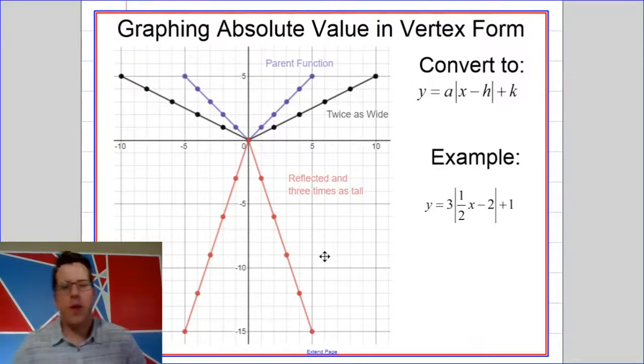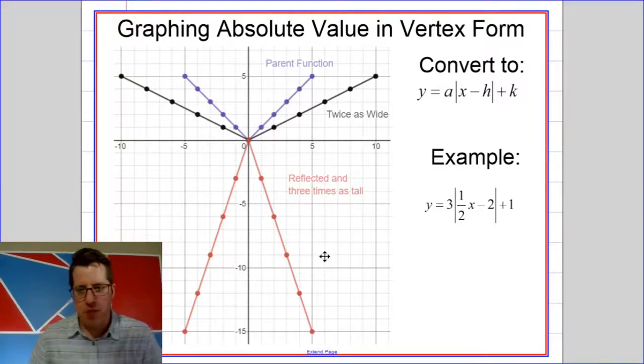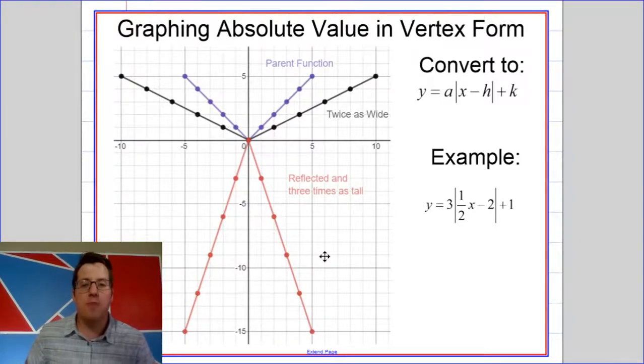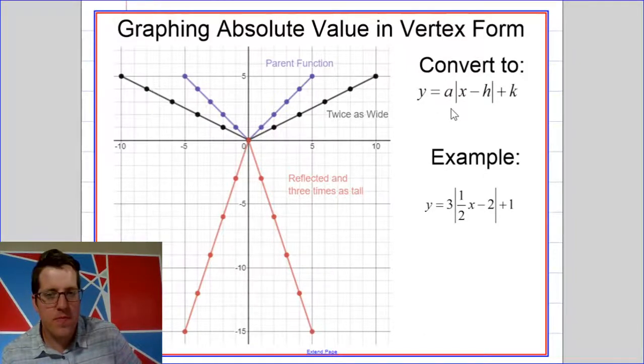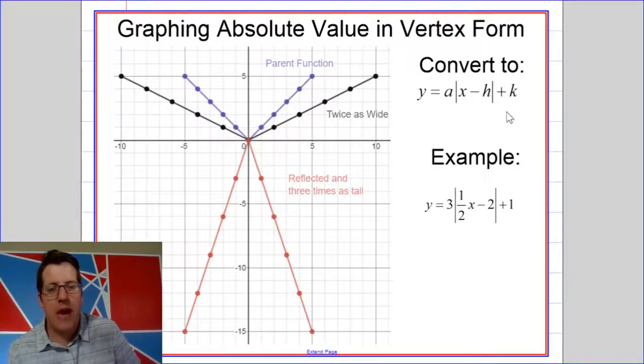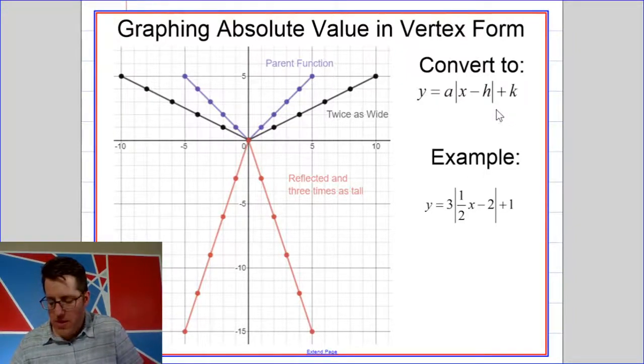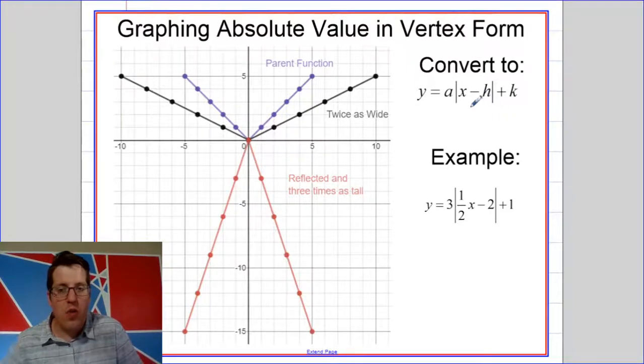We're going to be looking at absolute value graphs and quadratic graphs in what is called vertex form. Whenever we look at an absolute value in vertex form, we are going to convert it so that there is a number out front and no coefficient of x inside, and then an added number out back. This is going to make the easiest sort of a way to graph.